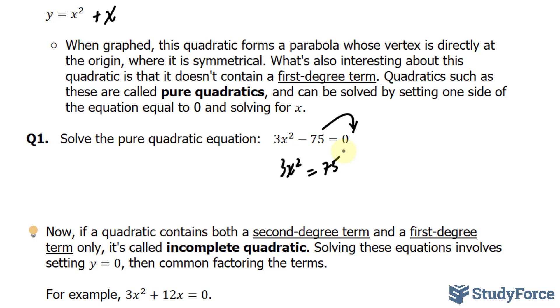The next step is to divide both sides by 3. x squared is equal to 75 divided by 3. x squared, therefore, is equal to 25.